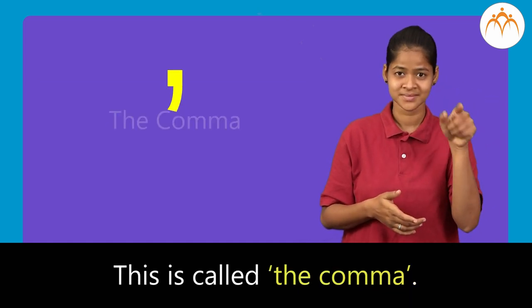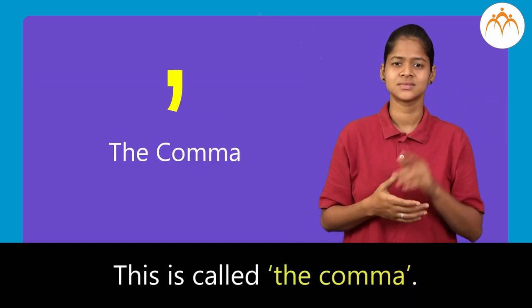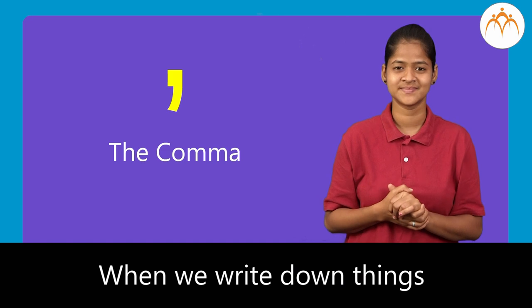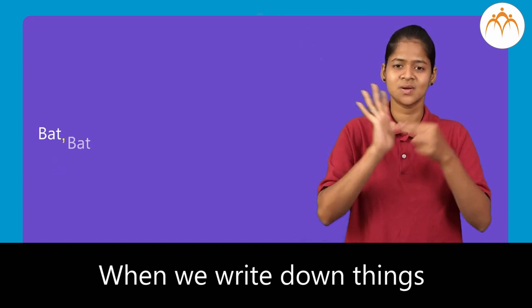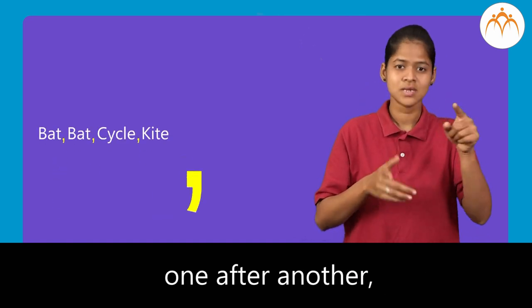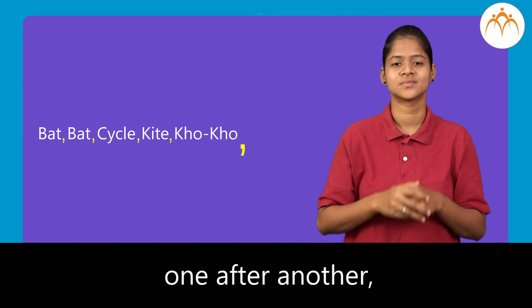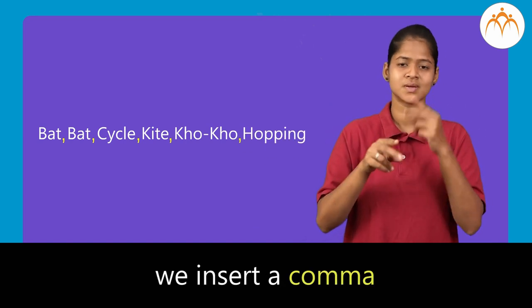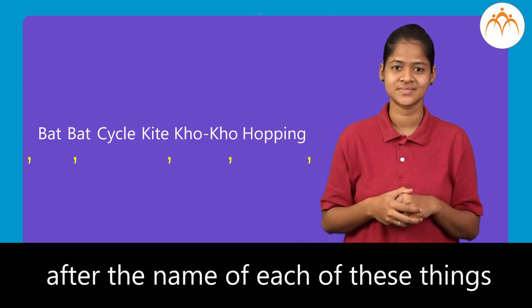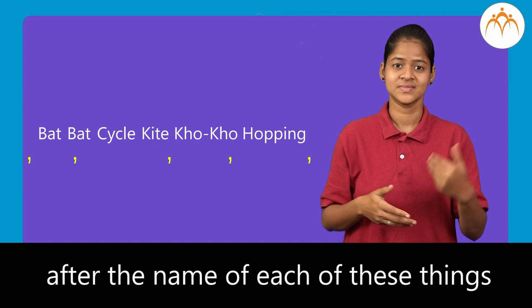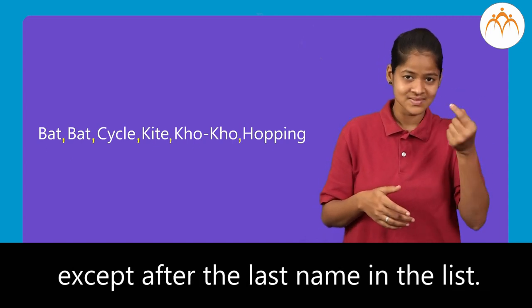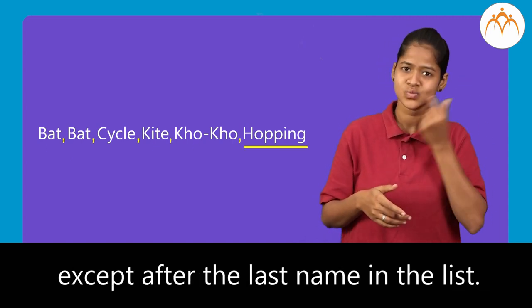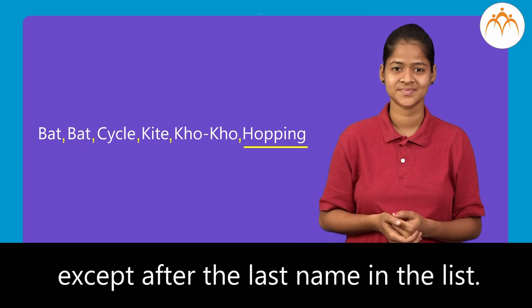Things of the same category are listed, so it is correct to insert the comma mark. This is called the comma. When we write down things which are of the same type one after another, we insert a comma after the name of each of these things except after the last name in the list.